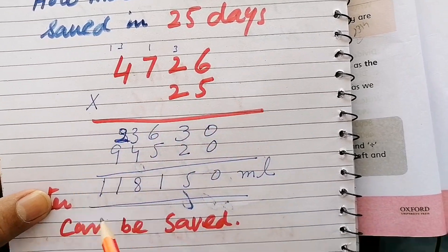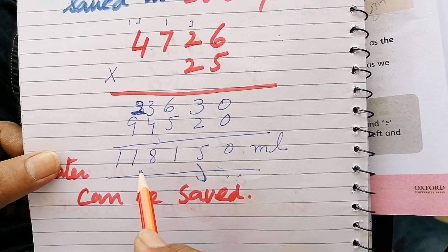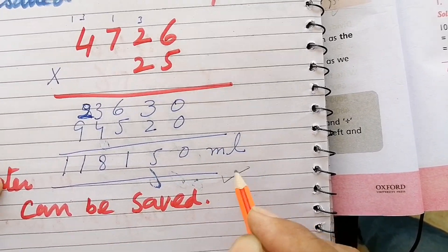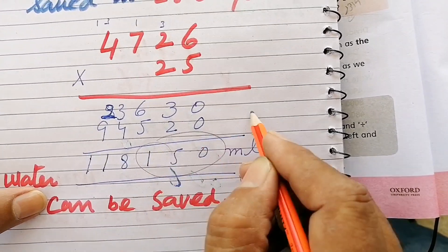You multiply these numbers: 4,726 times 25. This will give you 118,150 ml that can be saved.